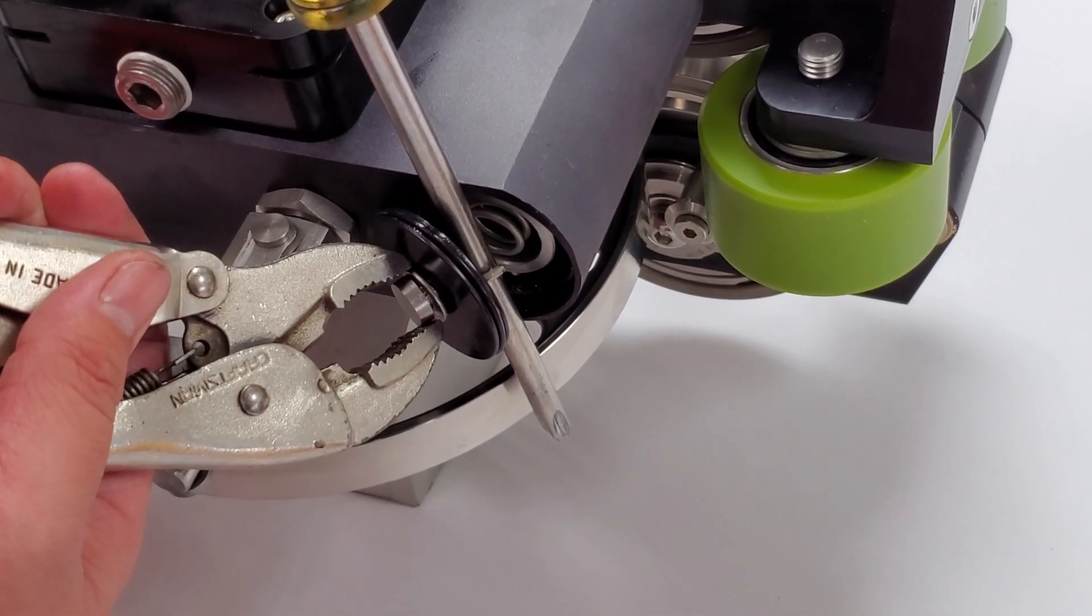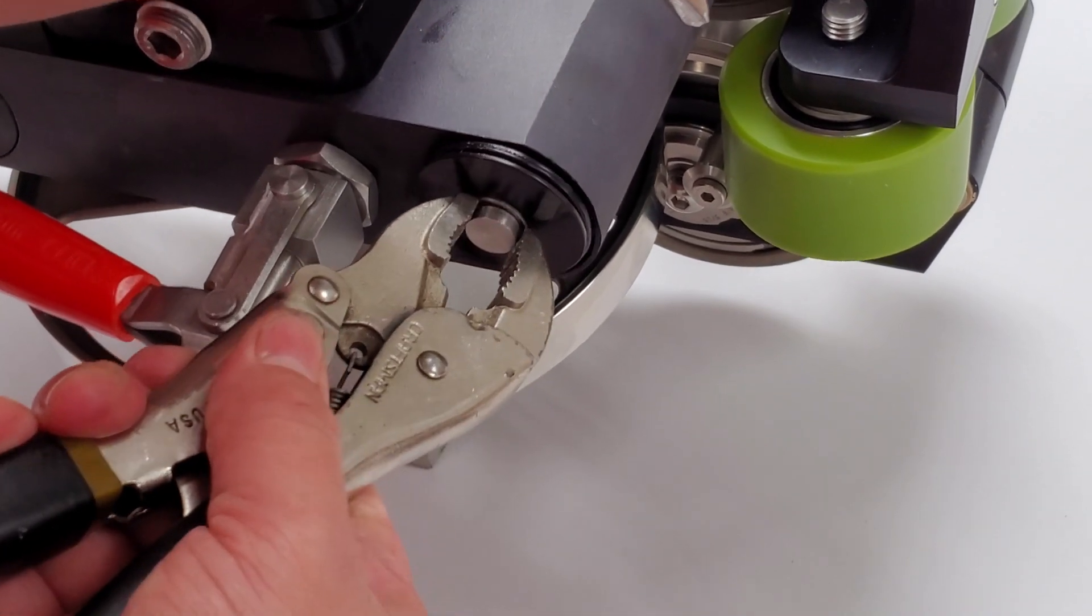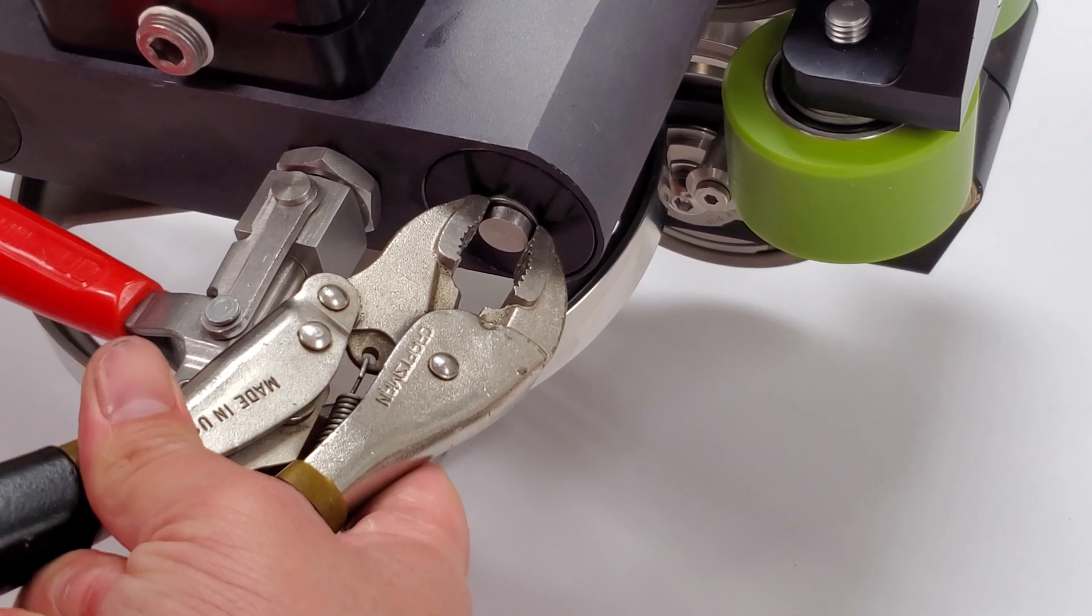Then remove the screwdriver and carefully let the spring pull the spring stops back into position. Do this on both springs on this side of the AM5K.